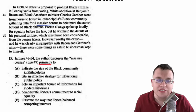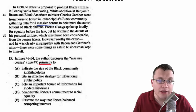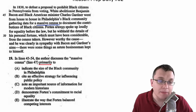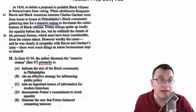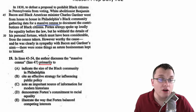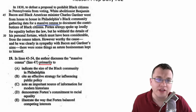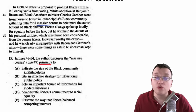We want to know why the author is discussing this census. In 1838, to defeat a proposal to prohibit black citizens in Pennsylvania from voting, white abolitionist Benjamin Bacon and black American minister Charles Gardner went from house to house in Philadelphia's black community, gathering data for a massive census to document the contributions of black citizens. Fortune always spoke up loudly for equality before the law, but he withheld the details of his personal fortune, which must have been considerable, from the census takers. However worthy the cause — and he was clearly in sympathy with Bacon and Gardner's aims — there were some things an astute businessman kept to himself. So why is the author talking about the census in this paragraph? Let's go through the choices.